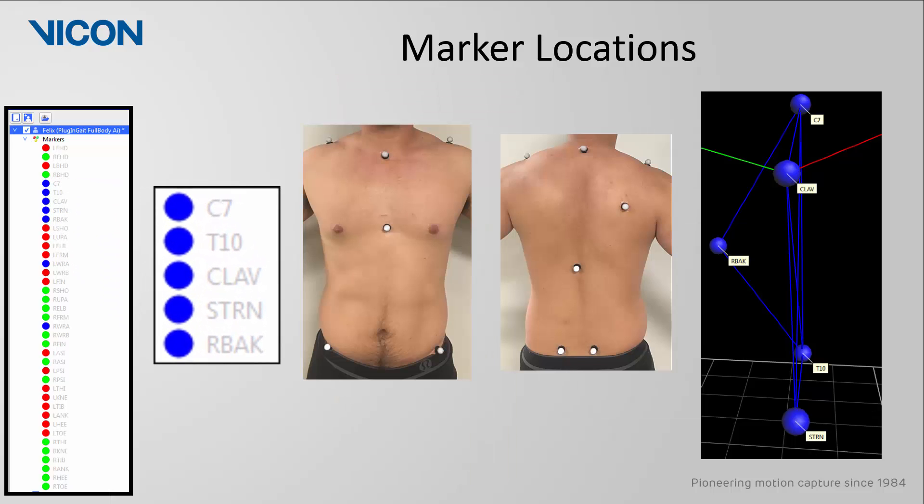The next five markers in blue are on the thorax. Three of these are located posteriorly. The C7 is the largest and most inferior vertebra in the neck. From there, you can palpate these spinous processes and count down to the T10. There is also a right back marker, which is placed on the right scapula, and is used to provide asymmetry in the template to help distinguish between left and right.